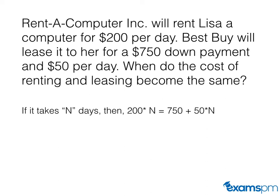We put all values with n on the left-hand side and all values without n on the right-hand side. So 200n minus 50n gives us 150n equals 750. To calculate n, we use 750 divided by 150, which gives us 5. So after 5 days, the cost of renting and leasing will be equal.